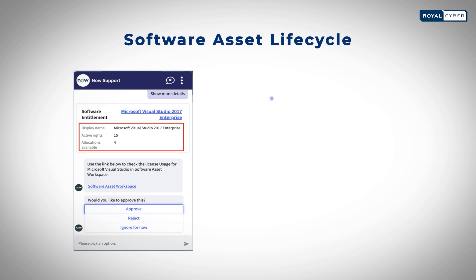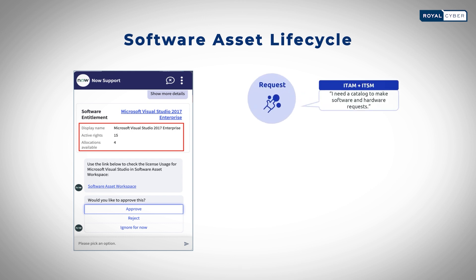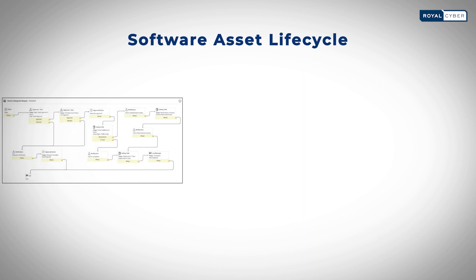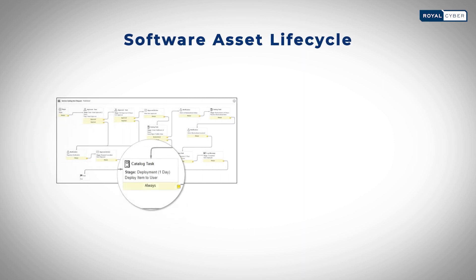Those responsible for approving IT requests should first compare available in-stock software assets to see if any are capable of fulfilling the request. If not, then the software asset will need to be purchased. With the right software asset selected and made available, the next stage involves deploying the software.